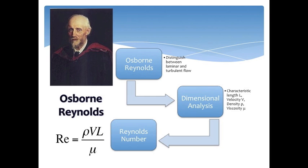Osborne Reynolds was the first person to demonstrate that a combination of variables could be used to distinguish flow into two types: laminar and turbulent.